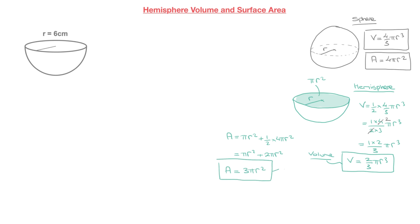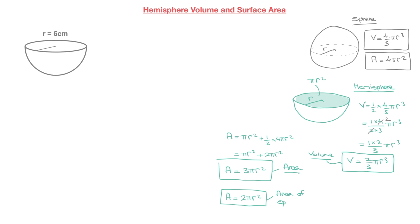That's the formula for the total surface area of a hemisphere. At times we'll be required to not include the surface area of the disk at the top — this is called the surface area of an open hemisphere. You can imagine an open salad bowl. In that case, we simply don't include the π r² term, so the formula for the surface area of an open hemisphere becomes one half of the surface area of a sphere, which is 2 π r².